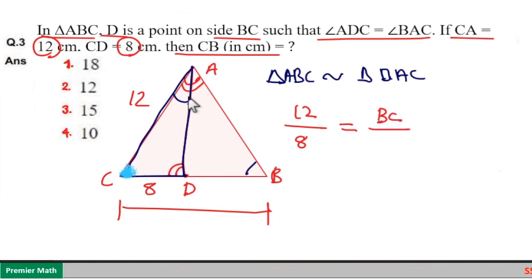BC is opposite to angle A. The angle equal to angle A in the smaller triangle is this one. Take the opposite side which is 12.